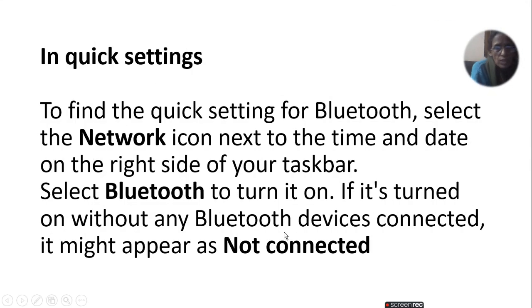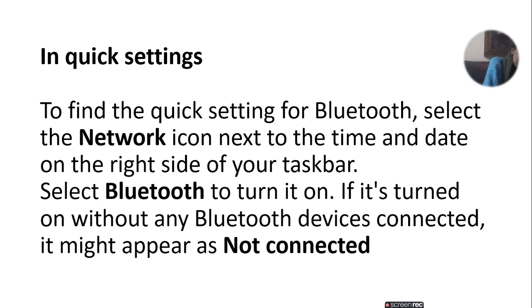To find the quick setting for Bluetooth, select the network icon next to the time and date on the right-hand side of your taskbar. Select Bluetooth to turn it on. If it's turned on without any Bluetooth device connected, it might appear as not connected.